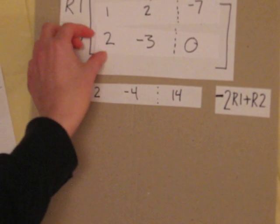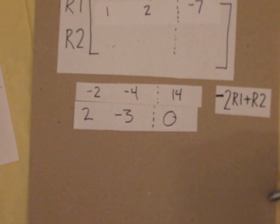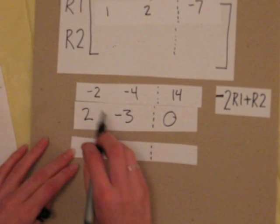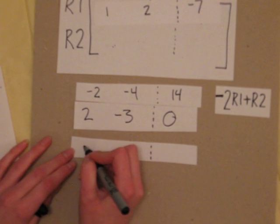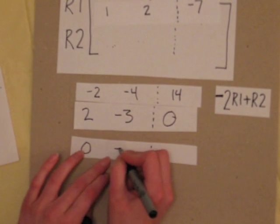Now, if we add that to the second row, we're going to get negative 2 plus 2, 0, negative 4, minus 3, negative 7.